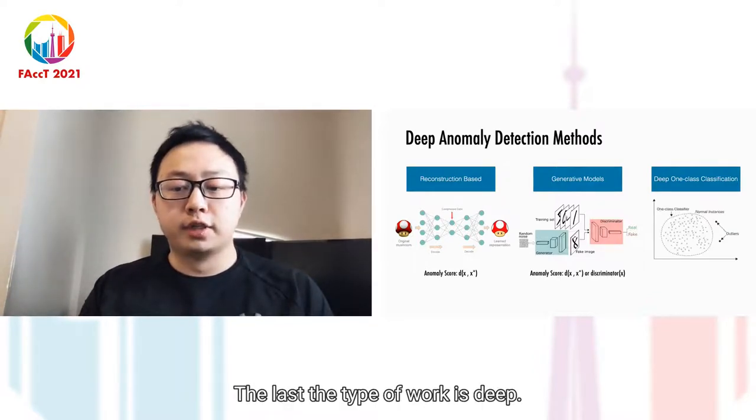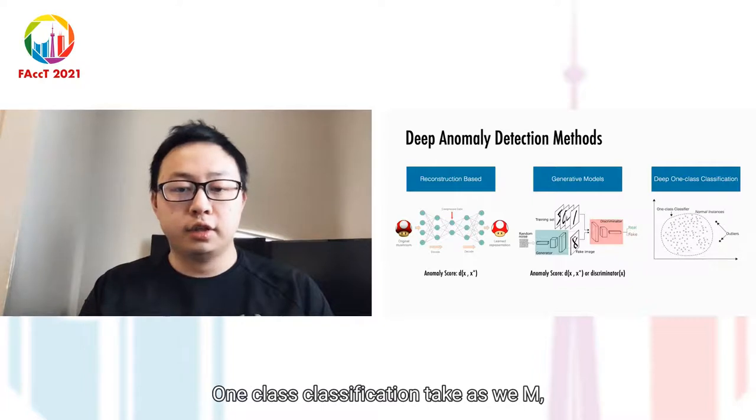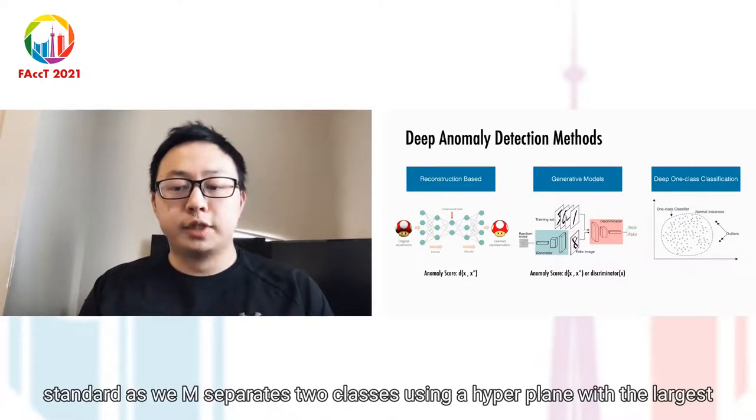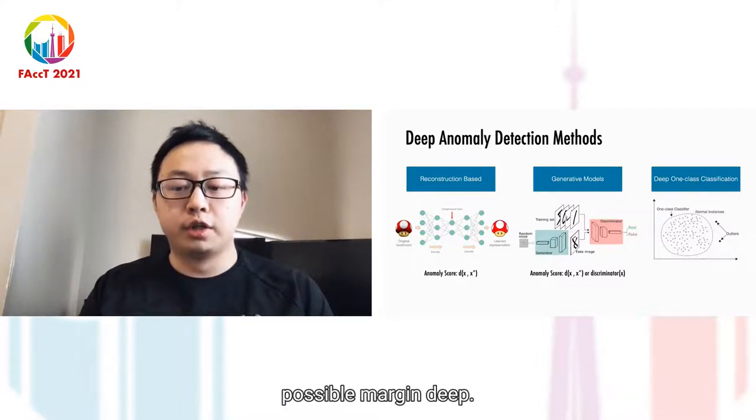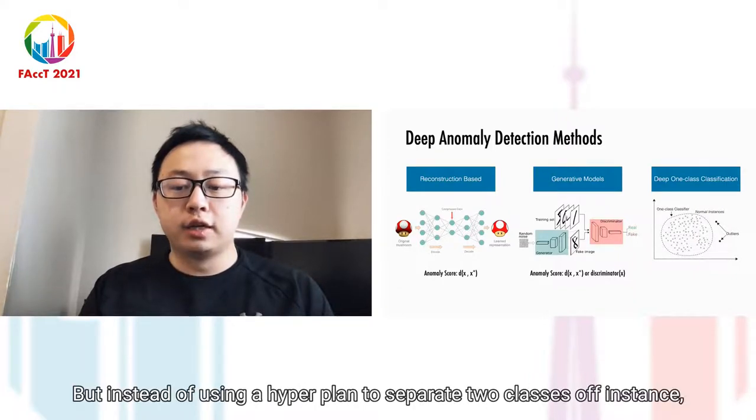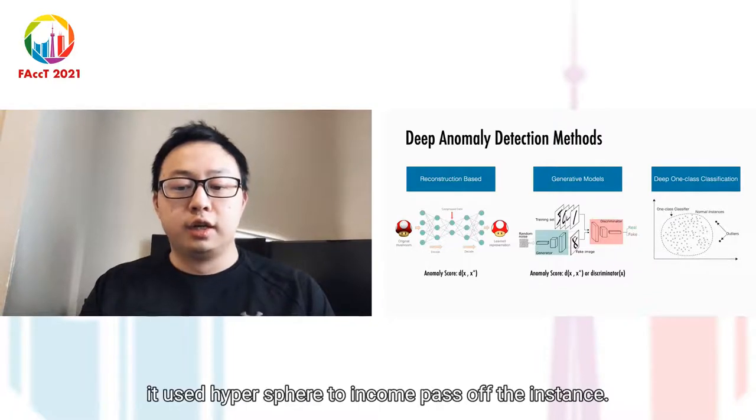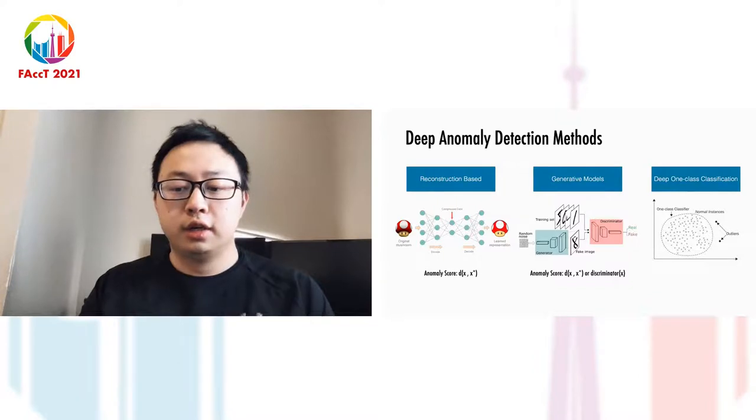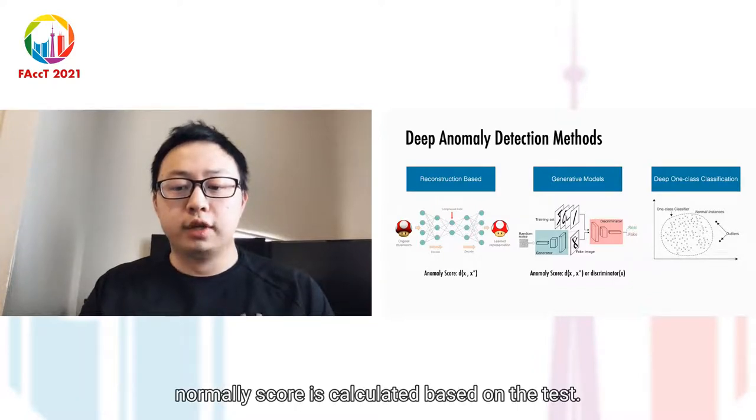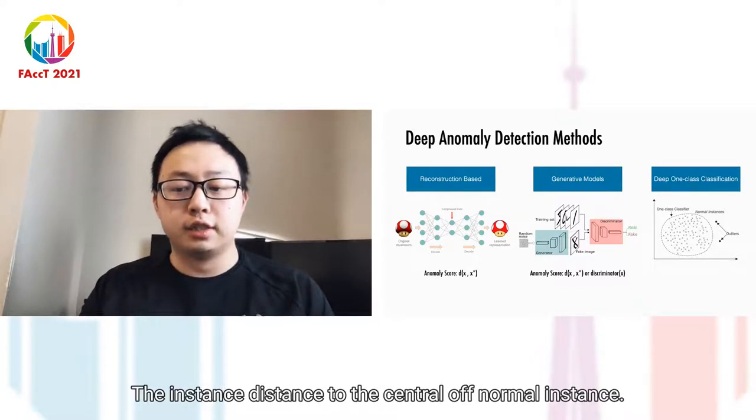The last type of work is deep one-class classification. Take SVM for example. Standard SVM separates two classes using a hyperplane with the largest possible margin. Deep one-class SVM is similar, but instead of using a hyperplane to separate two classes, it uses a hypersphere to encompass all instances. The anomaly score is calculated based on the test instance distance to the centroid of the normal instances.